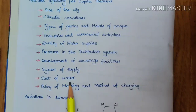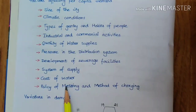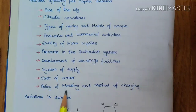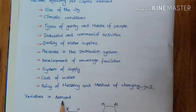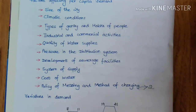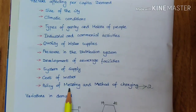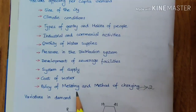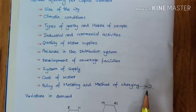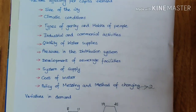The next factor is cost of water — if the cost is more, consumption will be less, and vice versa. The next is policy of metering and method of charging. There are two types: the first is metering, where the charge is based on how much water is consumed — the rate is given according to actual consumption.